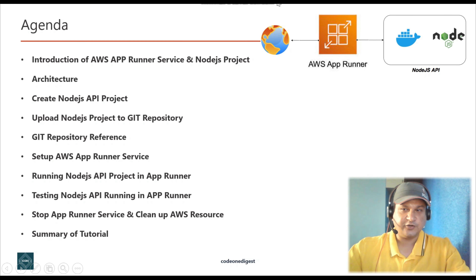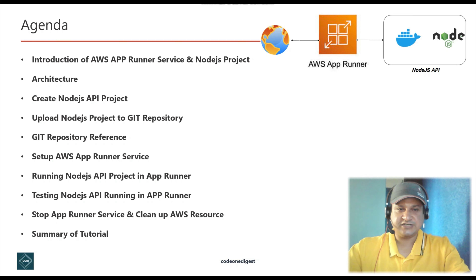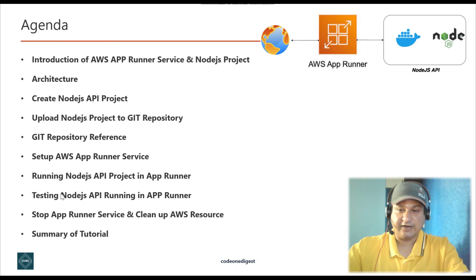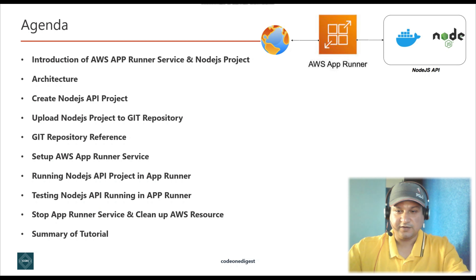Here is the agenda of this tutorial. I'll give you an introduction of AWS App Runner, then introduce the Node.js project. I'll show you an architecture diagram to help you understand what exactly we are trying to do. Then we'll create a simple Node.js API project — I'll give you the reference to my GitHub repository. I'll show you how to set up AWS App Runner, run our Node.js API project in it, test it, clean up all services and resources, and finally summarize what we learned.